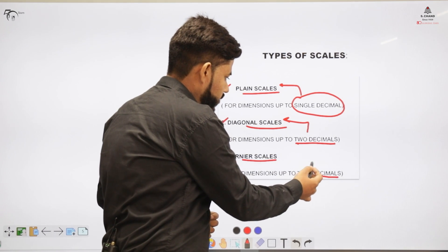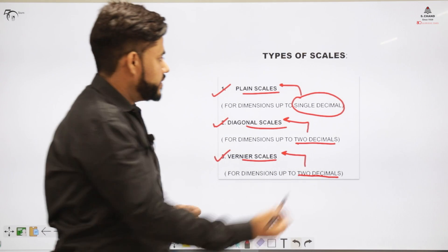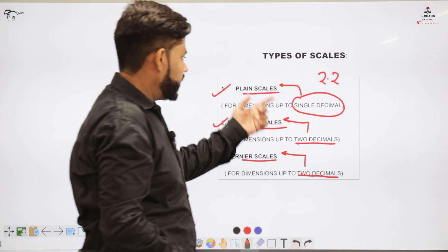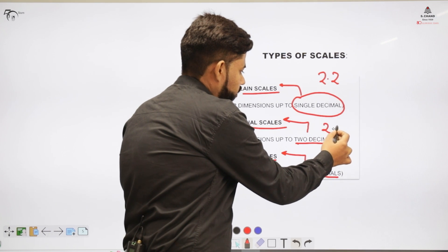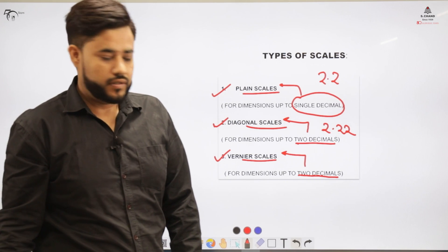And if we want to represent the dimensions up to two decimals we use the diagonal scale and similar for the two decimal case we can use this vernier scale. If we want to represent 2.22, then these diagonal scale or vernier scale will work.